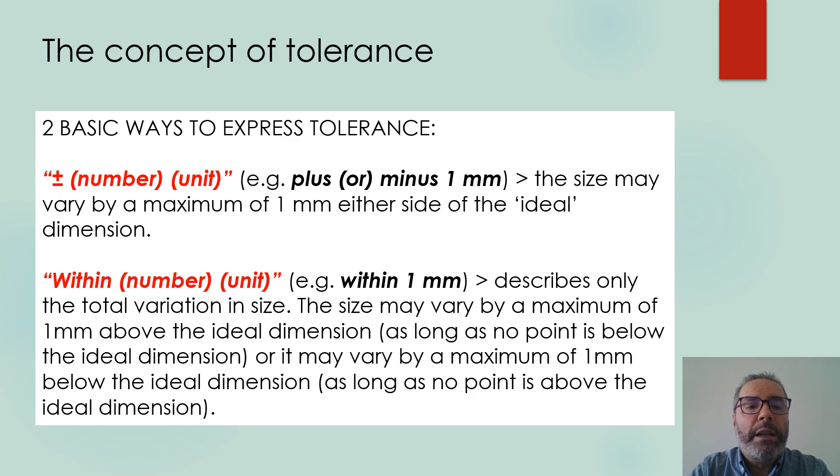If we express tolerance with the expression within plus the number and the unit, for example within 1 mm, it describes or it means that only the total variation in size. The size can vary by a maximum of 1 mm above the ideal dimension if no point is below the ideal dimension, or it may vary by a maximum of 1 mm below the ideal dimension as long as no point is above the ideal dimension. So it is a different way of expressing tolerance depending on the circumstances.